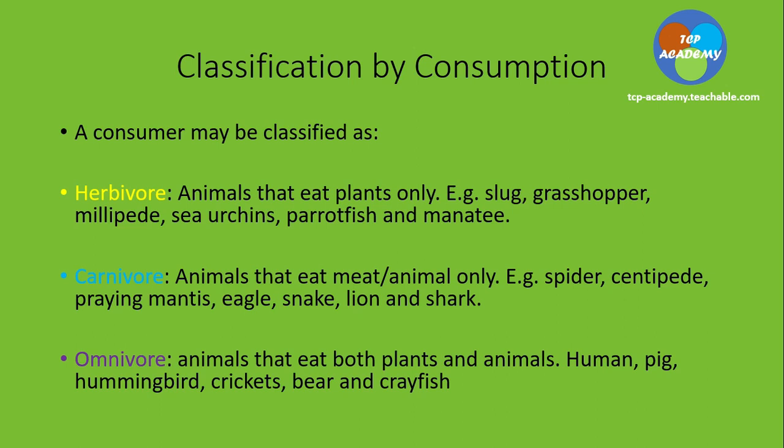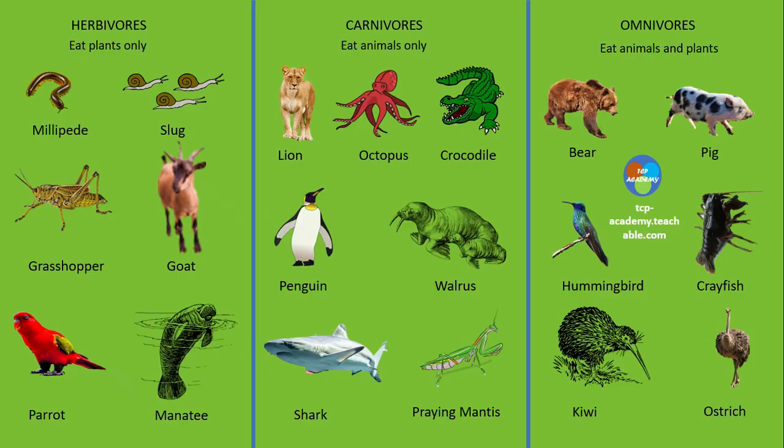Here we have a spread with some pictures of both carnivore, omnivore, and herbivore. This should probably concretize the idea of the whole feeding type. Here we have herbivore — the manatee, the parrot, grasshopper, goat, slug, millipedes — and carnivore there. This is a summary of the whole idea of herbivore, carnivore, and omnivore. You should be able to identify these organisms if they were to appear in front of you on a food chain or web.